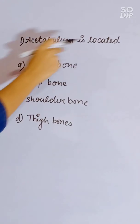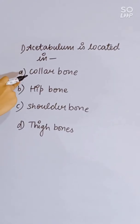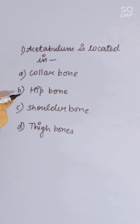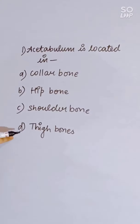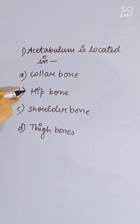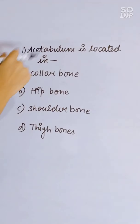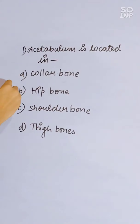Acetabulum is located in: collar bone, hip bone, shoulder bone, or thigh bone. Correct answer is hip bone, where the acetabulum is located.